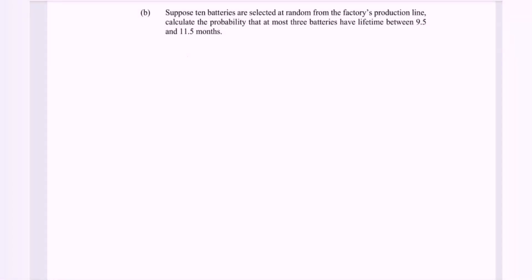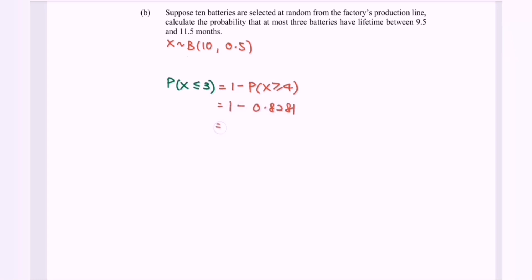For part B, 10 batteries are selected at random. Using the binomial distribution with n=10, calculate the probability that at most 3 batteries have lifetime between 9.5 and 11.5 months (p=0.5). P(X ≤ 3) = 1 - P(X ≥ 4) = 1 - 0.8281 = 0.1719.